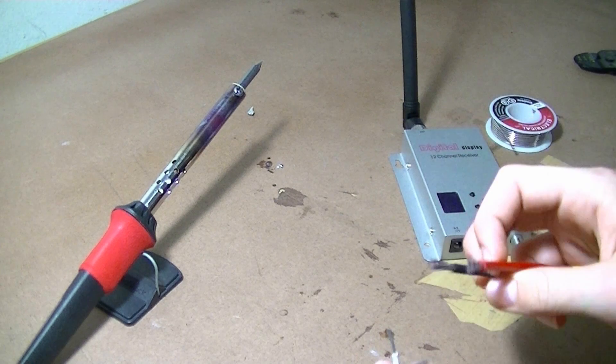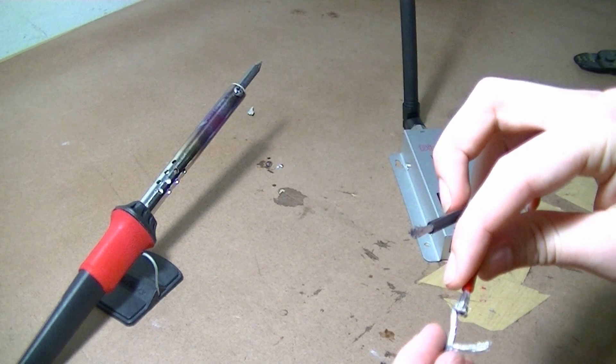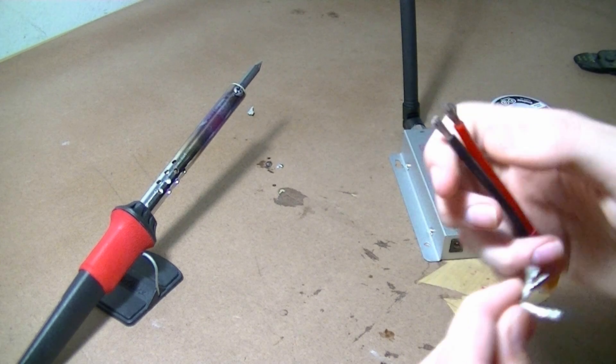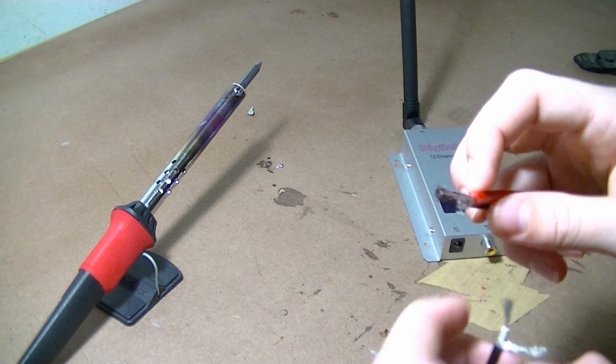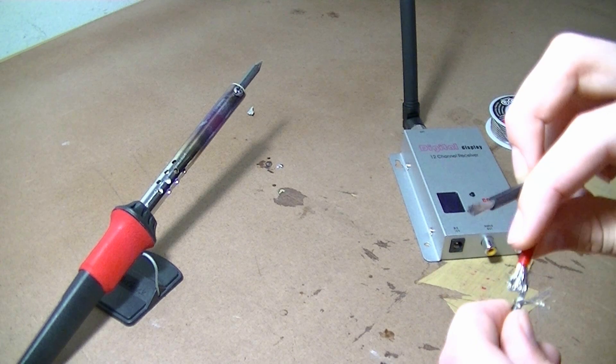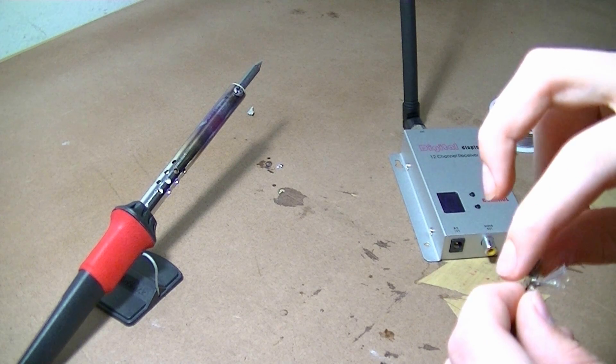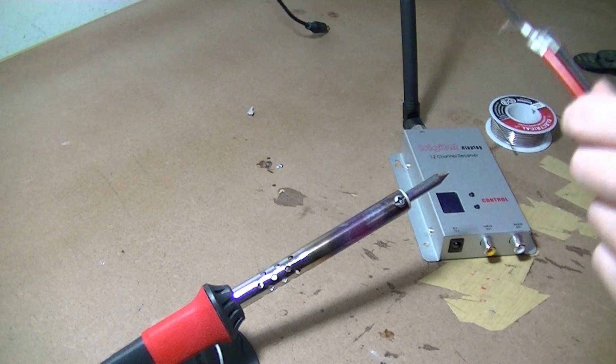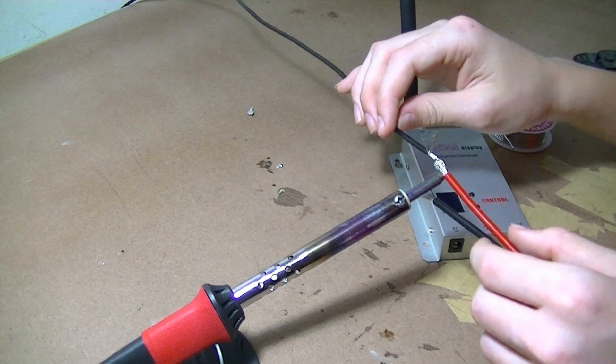Then you can fray out the positive leads and push them together. Once you push them together, twist it so it's strong. You can just put it on your soldering iron and solder it. You can just lay it on your soldering iron like this.